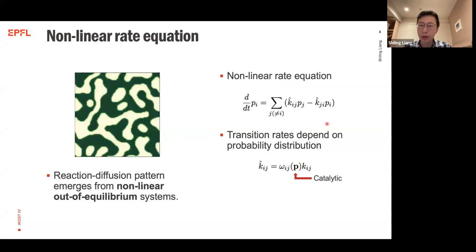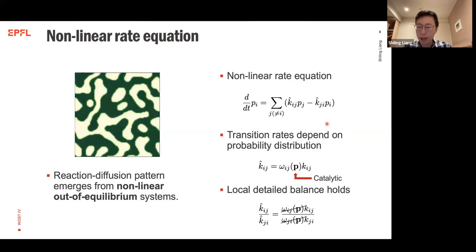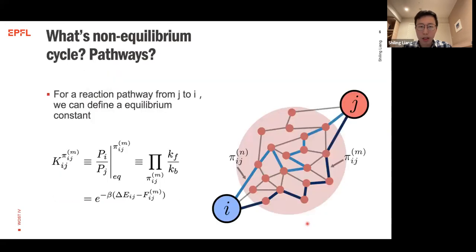This catalytic term is useful because the local detailed balance relation still holds. If we take the ratio of the forward and backward rates, the nonlinear catalytic term cancels, and we are left with only the linear term, which still satisfies the detailed balance relation.